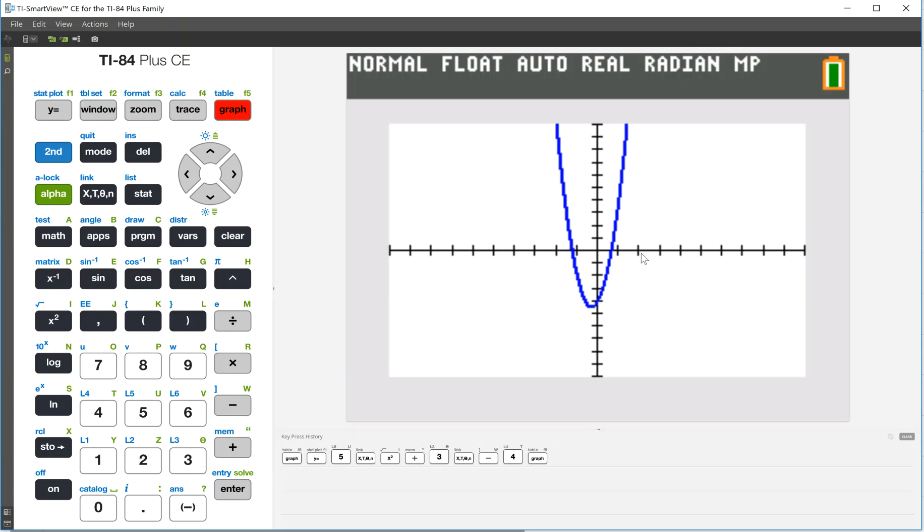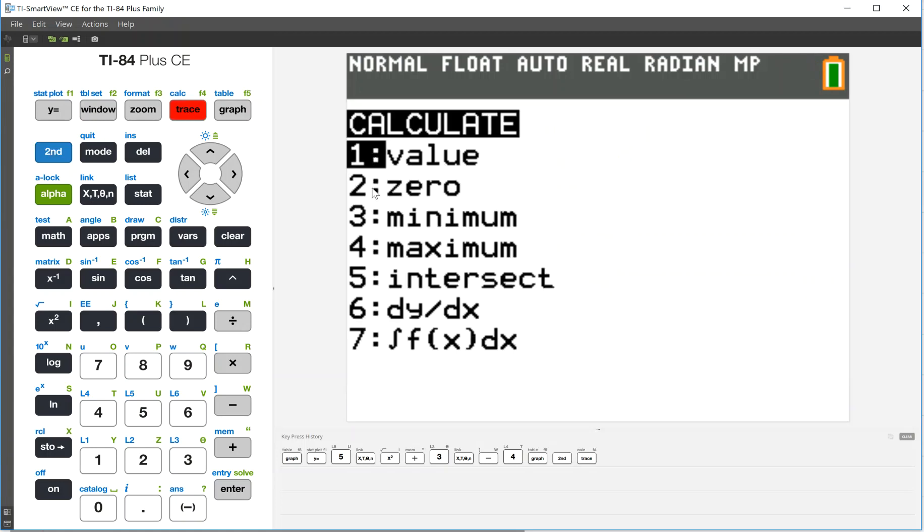You can see a similar looking graph here. We can't click on this window to find out the answers, but they do have some functionality that can help us. So if we do second trace, we can use this second option here, the zero option.